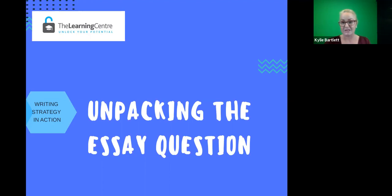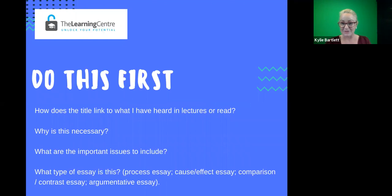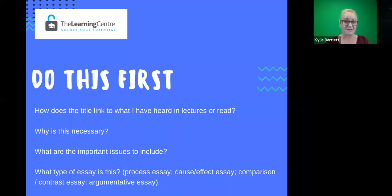Taking this strategy into action — the very first thing to do when you get your assignment is to look at the title of the essay question or topic and see if there is a connection to anything you've heard in lectures or your weekly readings. It's also powerful to look at your subject outline, go to the subject calendar, and skim through each week to see where you can spot a connection with your essay question and the weekly readings or key topics from a lecture.